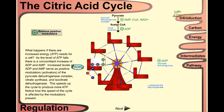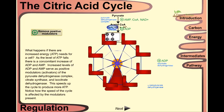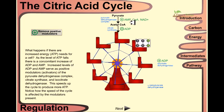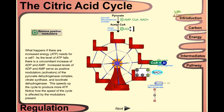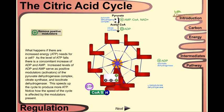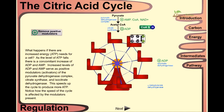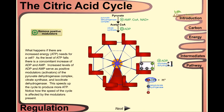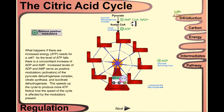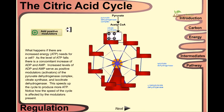These are the modulators like AMP, coenzyme A, and NAD+. They will activate pyruvate dehydrogenase complex, citrate synthase, and also further activate the isocitrate dehydrogenase. They activate all these enzymes because the positive modulators are there.